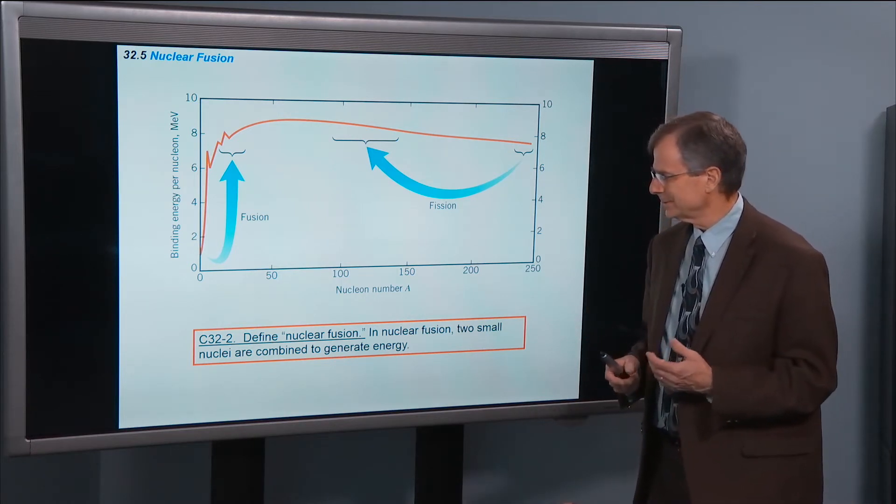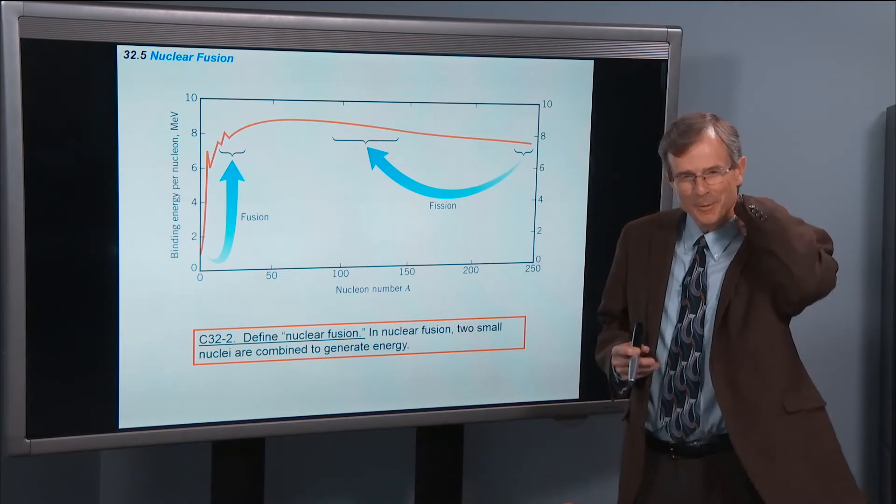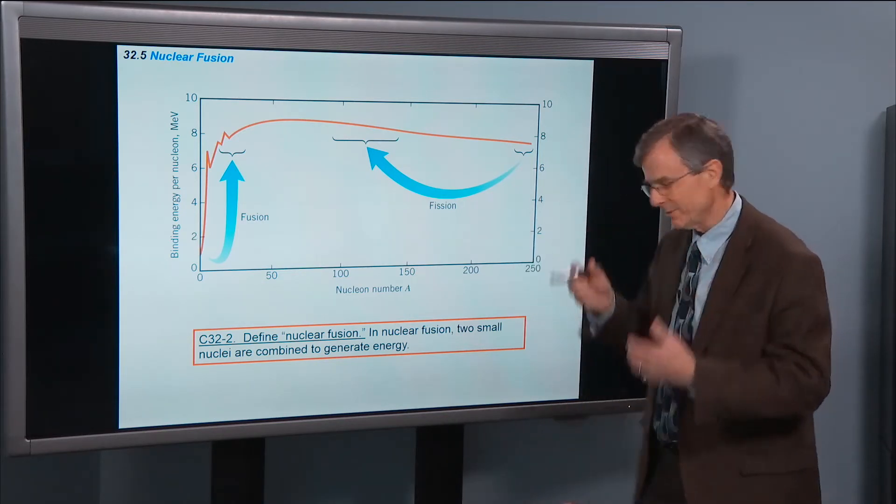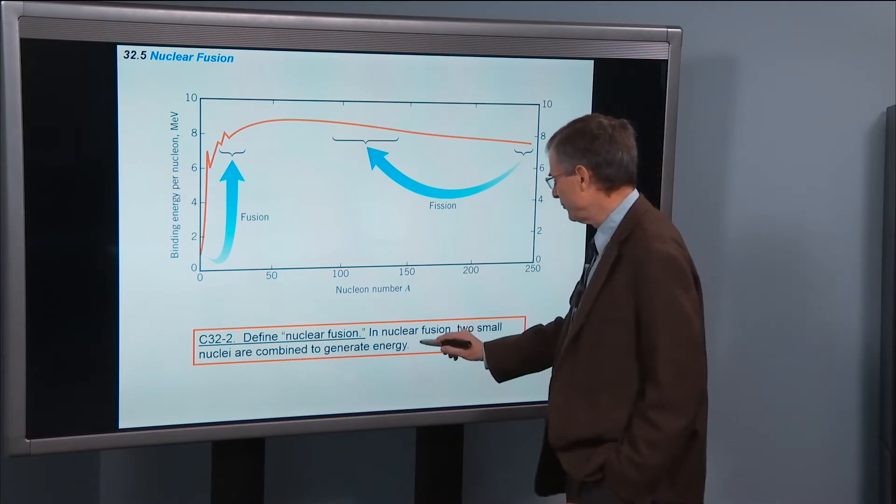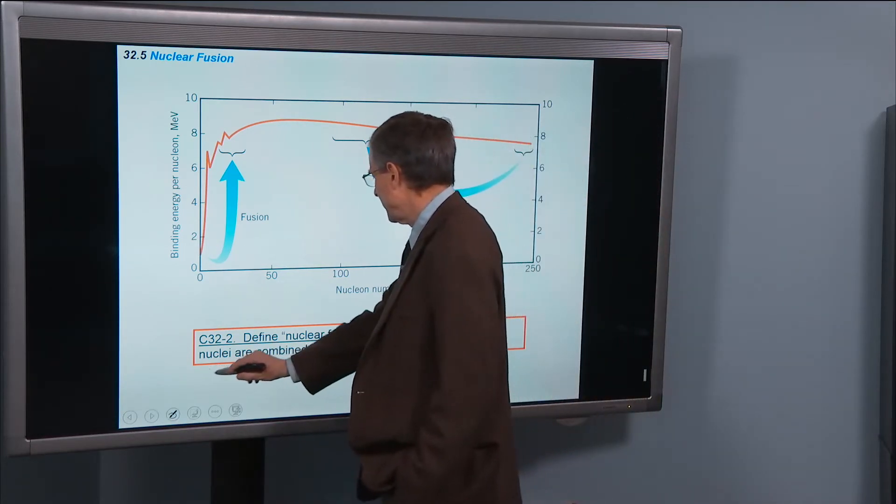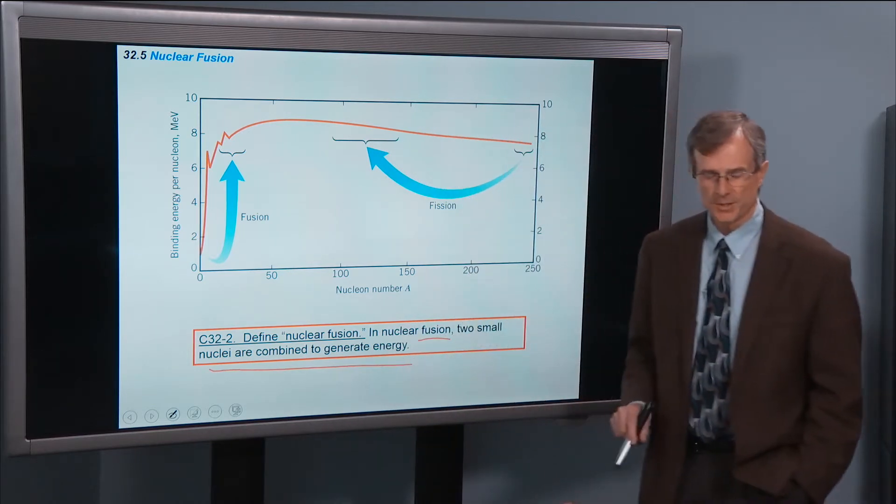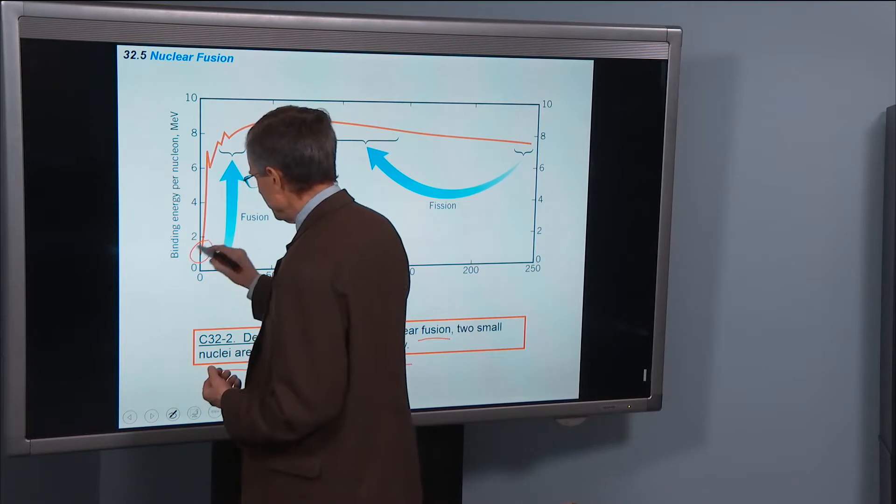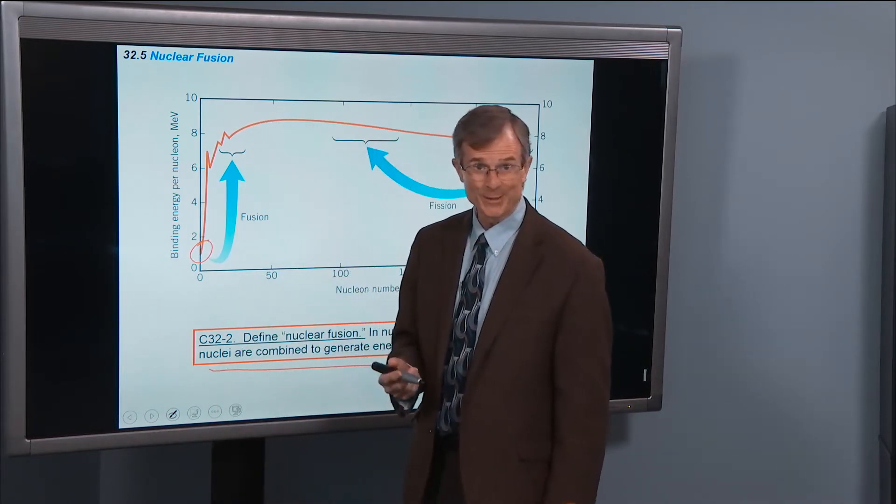Fission, well actually fusion is the easiest one for me to remember. And then once I remember what fusion is, then I can remember what fission is. In nuclear fusion, two small nuclei are combined together to generate electricity. So you take two small nuclei, such as hydrogen, that has a small nucleus, it only has one proton.